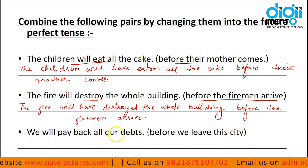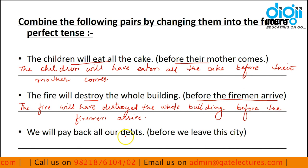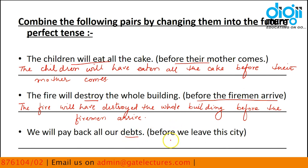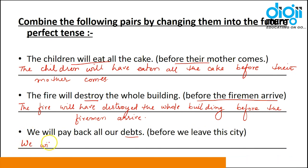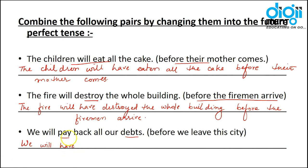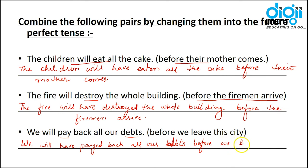'We will pay back all our debts before we leave the city.' The answer is: 'We will have paid back all our debts before we leave the city.' Note: 'debts' is spelled D-E-B-T-S — the B is silent, so it's pronounced 'debts'.